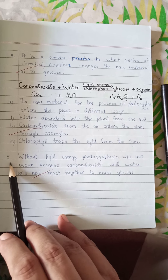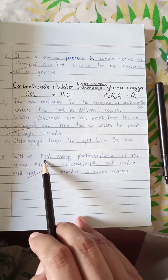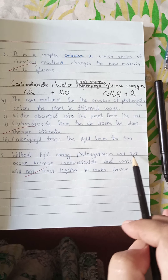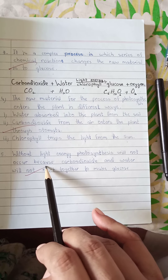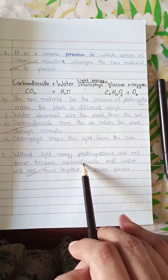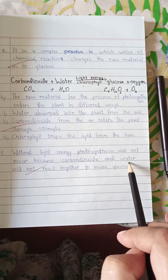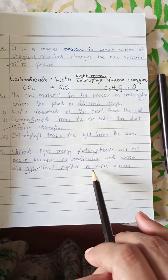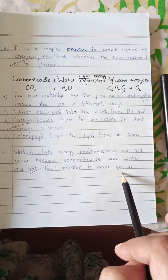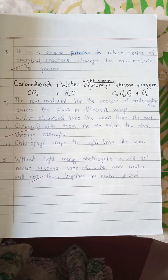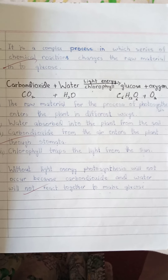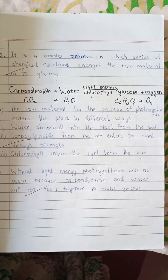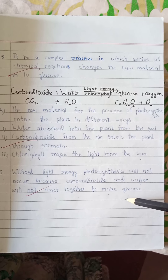Point number five: without light energy, photosynthesis will not occur because carbon dioxide and water will not react together to make glucose. Here your answer number two is completed.